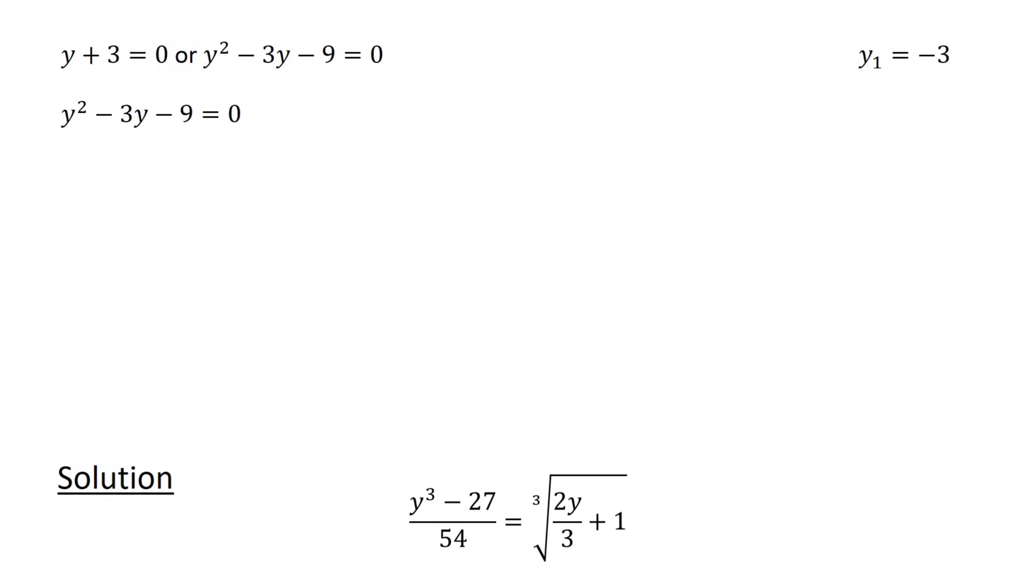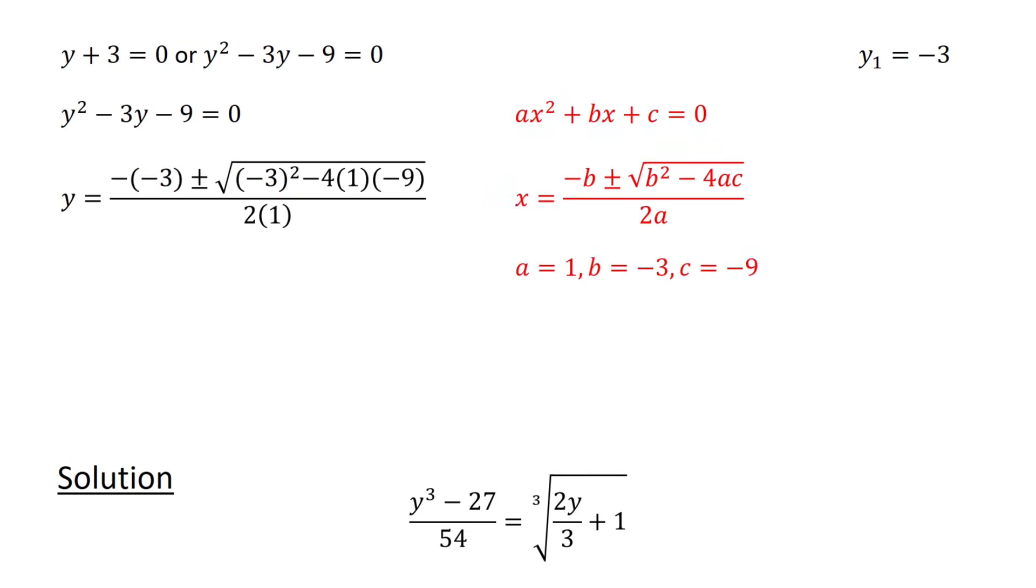When y squared minus 3y minus 9 equals 0, an application of the quadratic formula with a equals 1, b equals minus 3, and c equals minus 9 gives us two more solutions: y2 equals 3 plus square root 45 over 2, and y3 equals 3 minus square root 45 over 2.